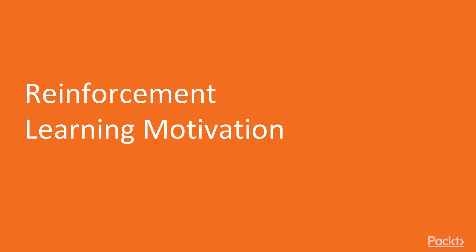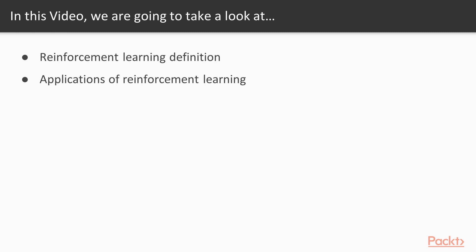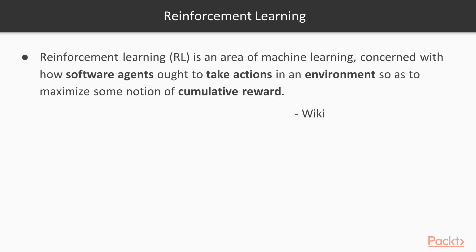Reinforcement learning motivation. In this video, we are going to define the term reinforcement learning and then see some of its applications. Here is a formal definition: RL is an area of machine learning concerned with how software agents ought to take actions in an environment so as to maximize some notion of cumulative reward. In essence, we are talking about an agent which learns to behave in a certain environment and tries to achieve a certain goal.